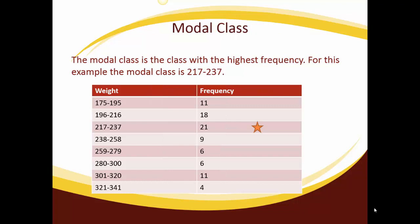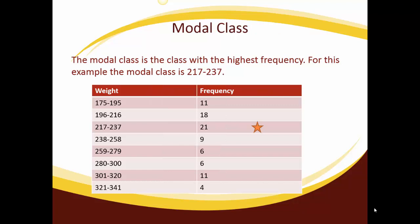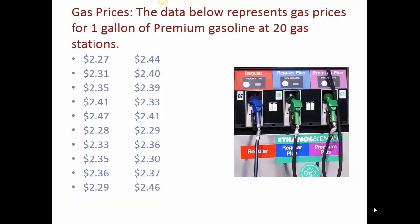We can talk about things like modal classes where the modal class is the class with the highest frequency. So in our example, looking at the football players, 217 to 237 was the most frequent weight class. When I'm looking at the modal class, we usually do talk about frequency, but it wouldn't change it at all if I went back to the percents. It's also going to have the highest percent, the 24.4. So even though traditionally we talk about modal being frequency, you could do percentages and it would be the same.